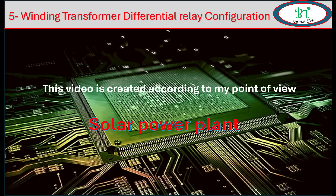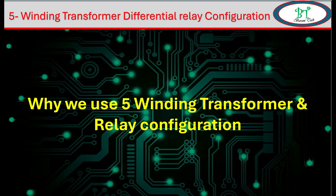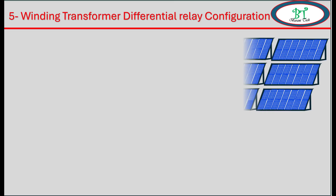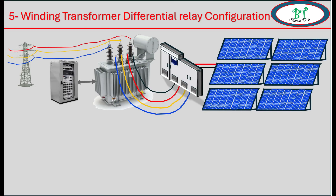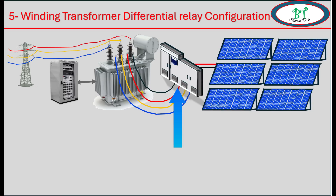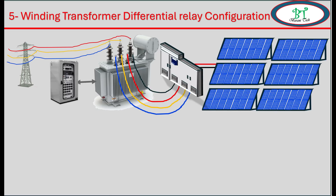Before going into this topic, we will see why we use the five-winding transformer in a solar plant. Let us consider we are using a two-winding transformer in a solar system. The solar array converts light energy into electrical energy. This power is connected to a power module, which converts DC to AC and is connected to the LV side of the transformer. From the HV side, it is connected to the grid.